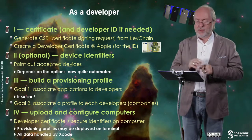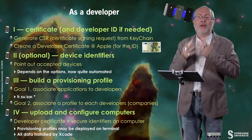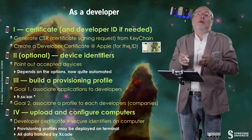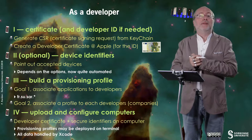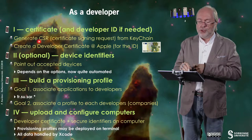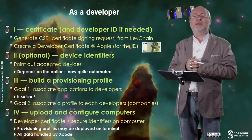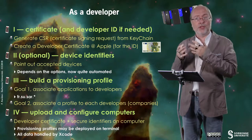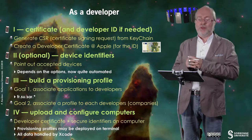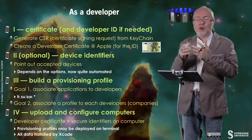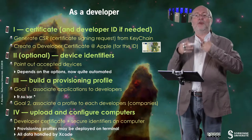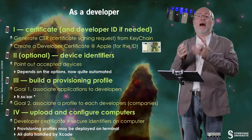The first one is the creation of a certificate and a developer ID if needed. You don't need it if you're just using your Apple ID. So you generate a CSR, a certificate signing request. You use Keychain for that. And then, based on the CSR, you create a developer certificate at Apple. This will generate a unique ID that will identify you as an individual developer.